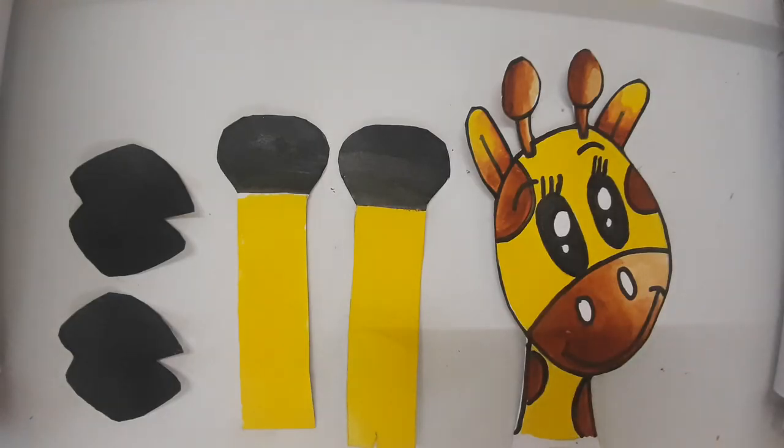Now you can see I have colored my giraffe and I made two front legs also. I have made other legs also and you can also make the parts of giraffe like this. Now I will assemble it to make my pencil stand.